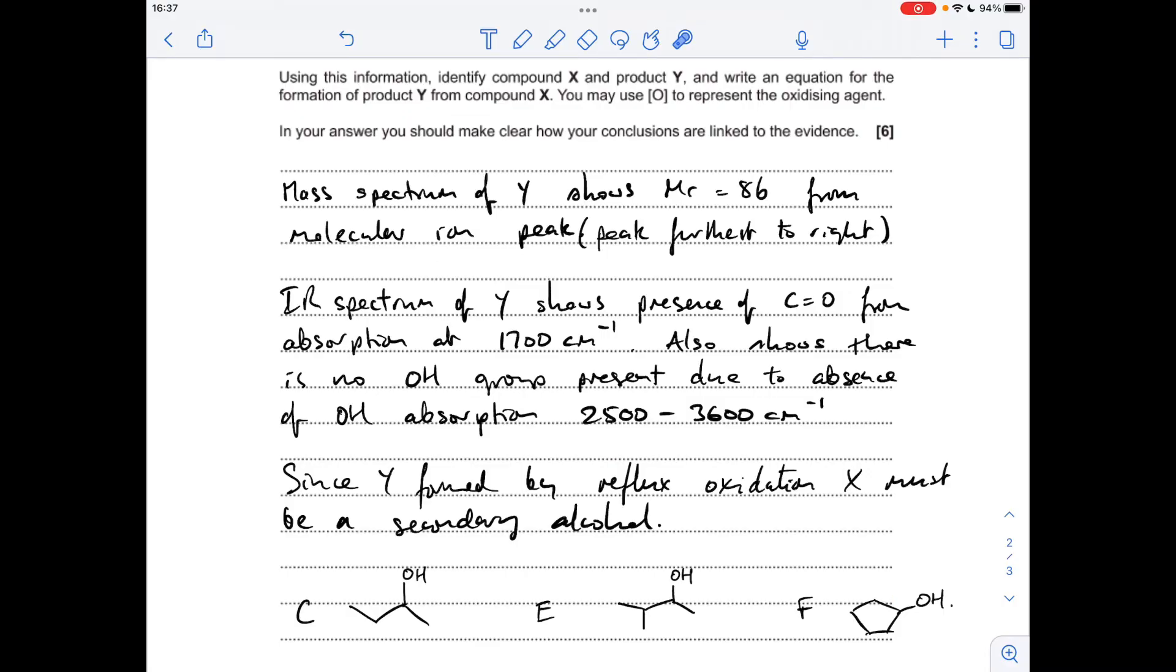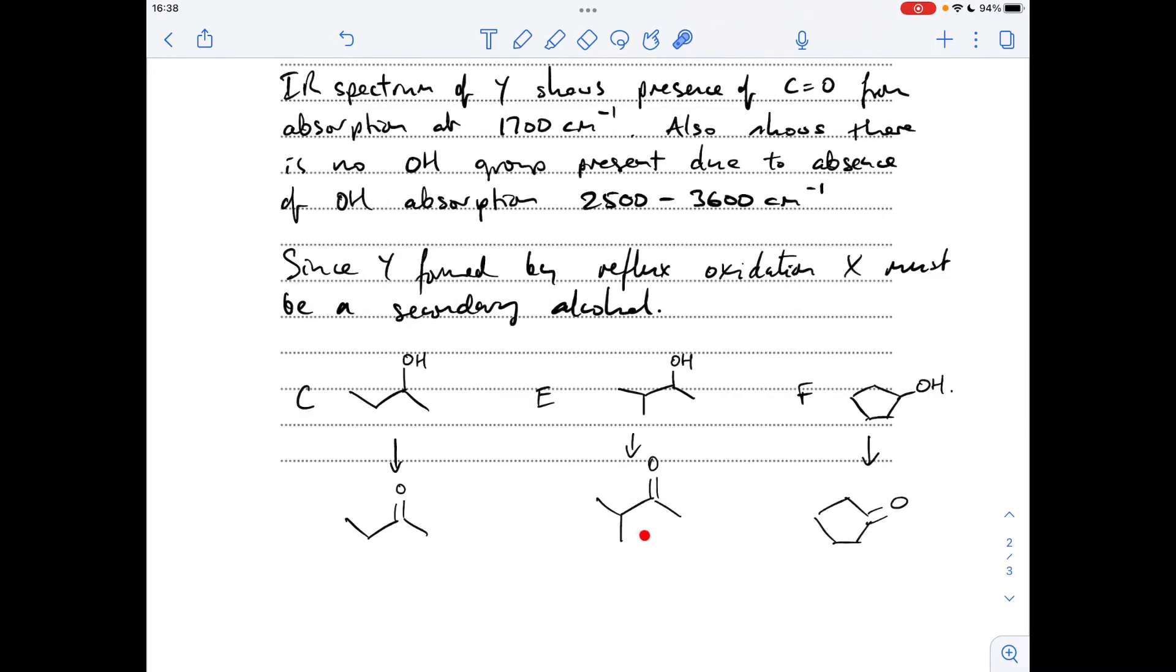So if we think about what they would form under oxidation now. These are the products of the oxidations of those three alcohols. And what you'll find if you work out the MR of the three products, this one here has an MR of 86.